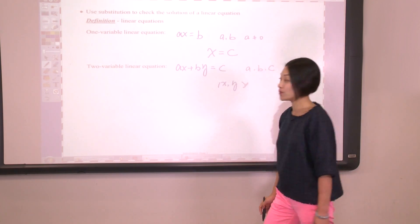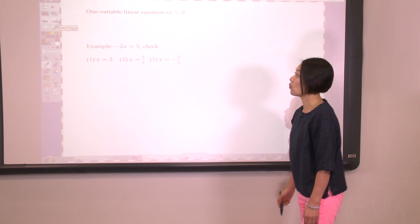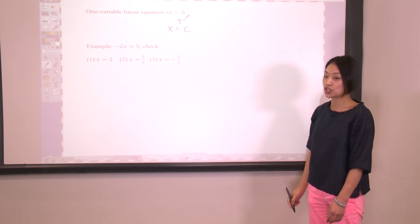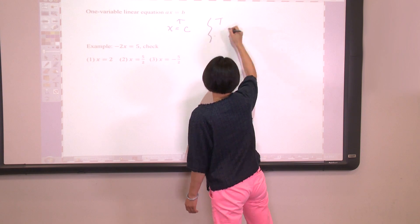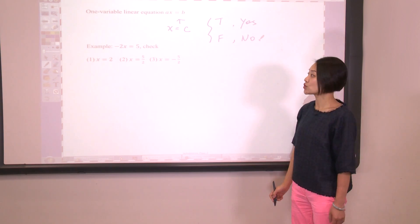Let's turn to the next page. Starting with a one-variable linear equation ax equals b, all we need to do is plug x equals c into this equation and check whether it is true or false. If it is a true statement, then the answer will be yes, it is a solution. If it is a false statement, then the answer will be no, it's not a solution.